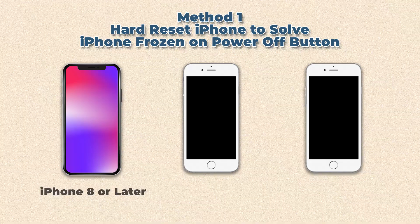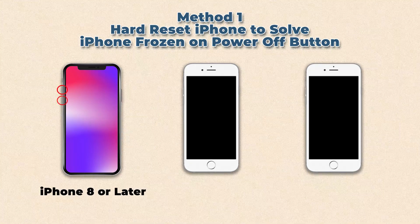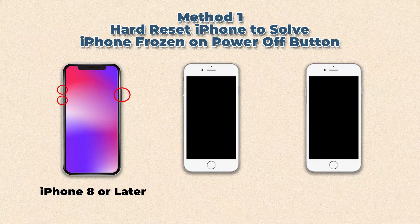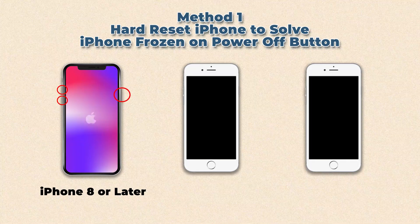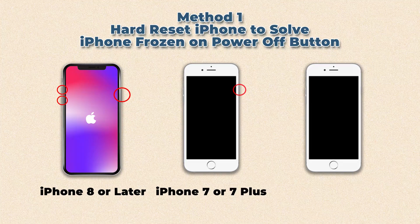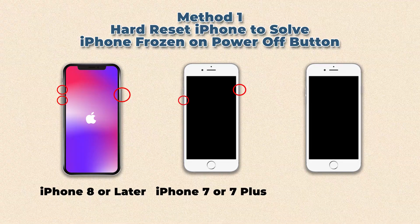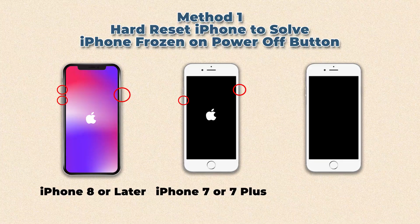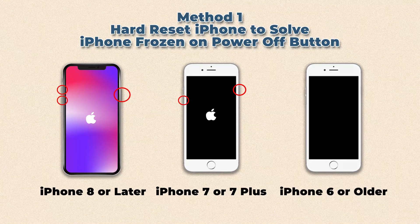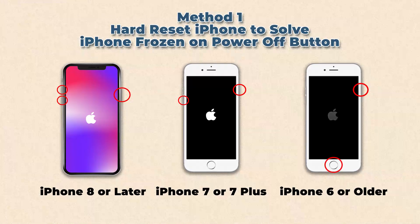For iPhone 8 or later, press and quickly release the volume up and down buttons successively, then press and hold the power button until you see the Apple logo. For iPhone 7 or 7 Plus, press the power and volume down buttons at the same time and hold them until the Apple logo appears. For iPhone 6 or older ones, hold the power and home buttons at the same time until the Apple logo appears.